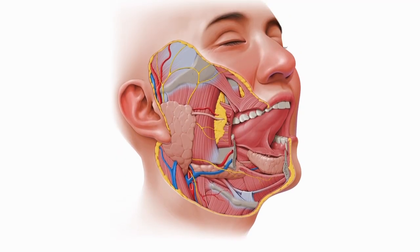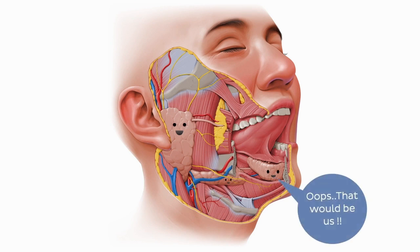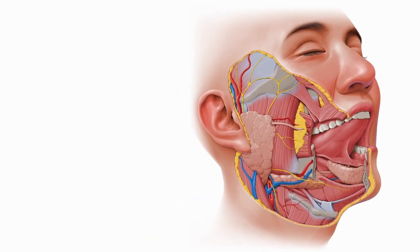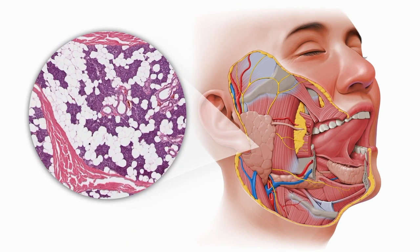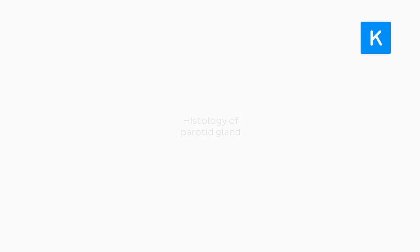But what's the culprit behind all these accidents? It's of course the salivary glands. Today we're looking at the parotid gland, or more specifically its microstructure, as we investigate its histology.